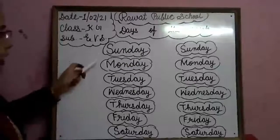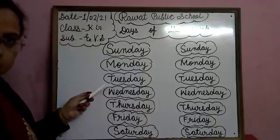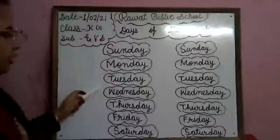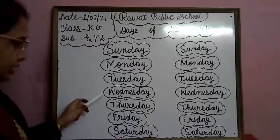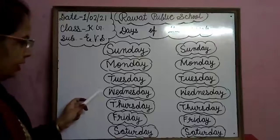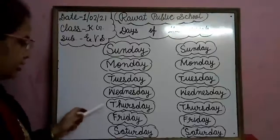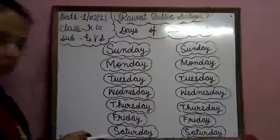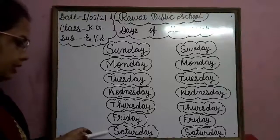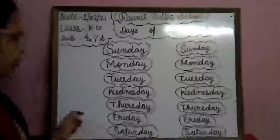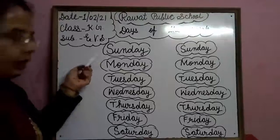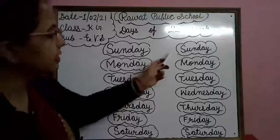Sunday, Monday, Tuesday. Jaldi se aa — Wednesday. Thursday, Friday, Saturday. Thursday, Friday, Saturday. Once again — Sunday. Okay. Sunday, Monday, Tuesday.